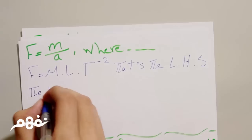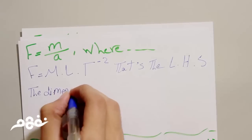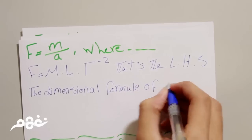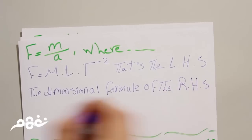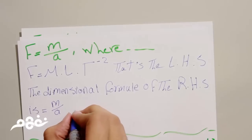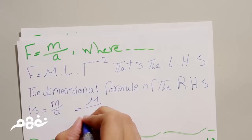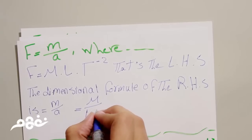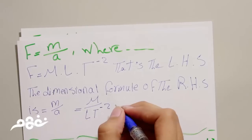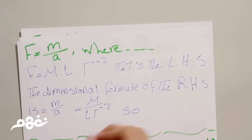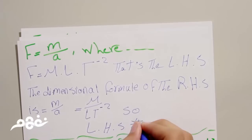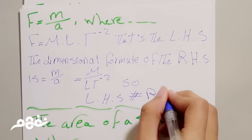The dimensional format of the right-hand side equals mass times acceleration, which equals mass times length times time to the power of negative 2. So the left-hand side equals the right-hand side.